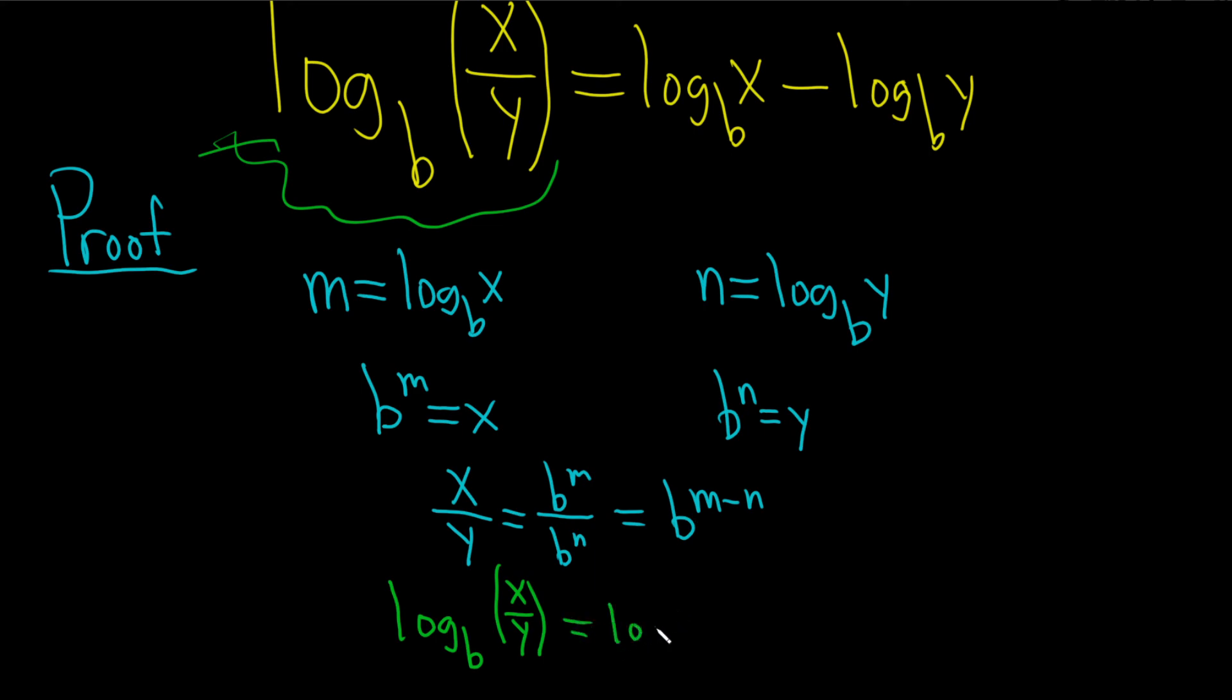And this is equal to log base b of b to the m minus n. But we know this goes away, this cancels. So you just get m minus n. And m is log base b of x minus log base b of y. And that completes the proof. We have verified or proven the quotient rule for logarithms.